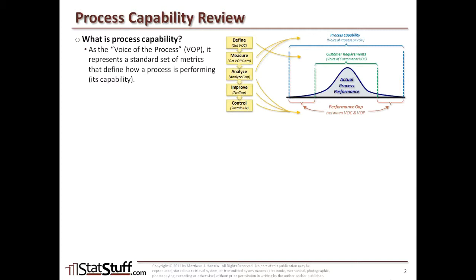The example we've used before is a distribution reflecting actual process performance. If we're following the define phase through the DMAIC methodology, the define phase is when we're trying to understand the voice of the customer, or VOC — that's where the customer defines their requirements or expectations. We might outline those based on the lower spec limit and upper spec limit, where anything within that portion is something good that the customer is willing to pay for. It's in the measure phase when we gather data we can trust, data we'll eventually use to measure process capability.